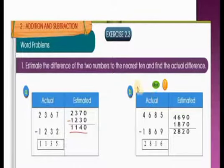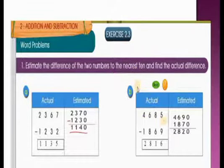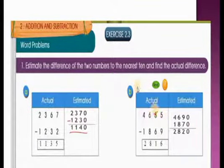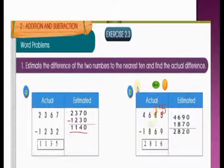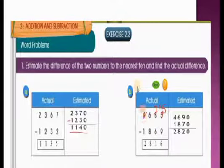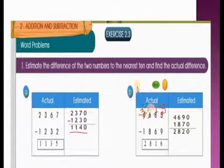Here also we have to estimate the difference of 2 numbers to the nearest 10. The problem is 4,685 minus 1,869. So 5 is smaller than 9, so borrow from 8 — it becomes 7 and this becomes 15. 15 minus 9 is 6; 7 minus 6 is 1. 6 is smaller than 8, so take borrow from 4 — it becomes 3 and this becomes 16. 16 minus 8 is 8; 3 minus 1 is 2. Actual answer: 2,816.